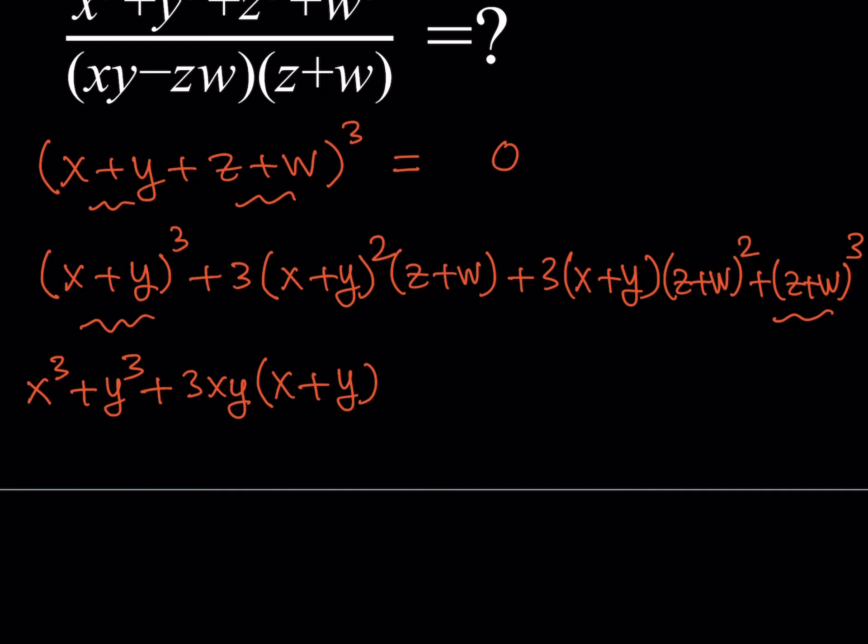x cubed plus y cubed plus taking out the 3xy as a common factor, times x plus y. And then for the last term, it's going to look like z cubed plus w cubed plus 3zw times the quantity z plus w.